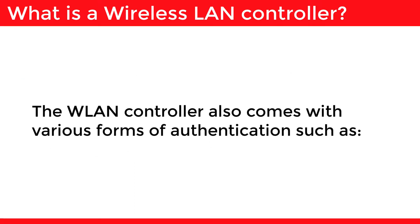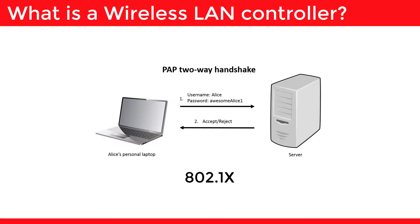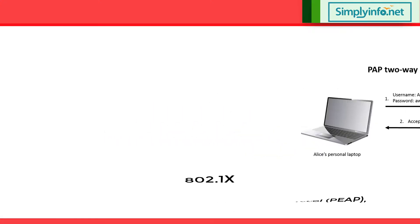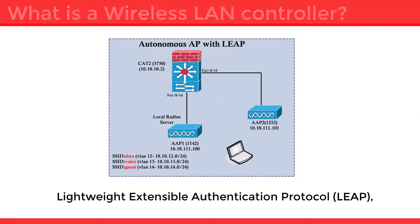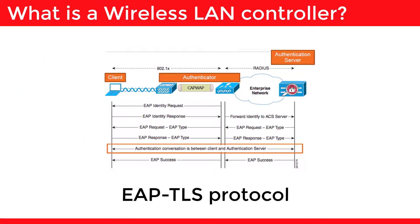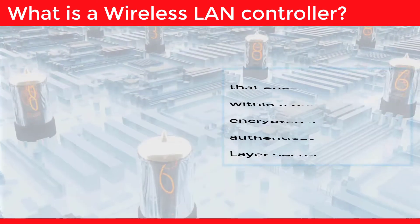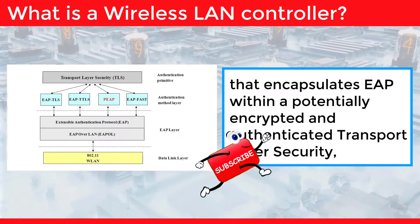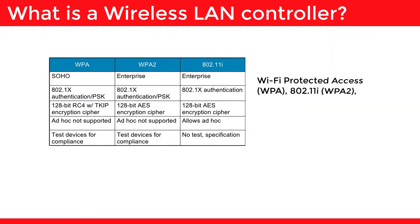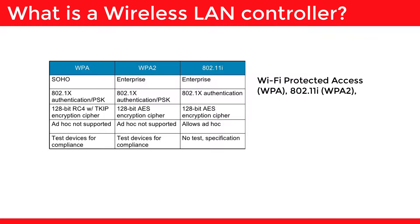The WLAN controller also comes with various forms of authentication such as 802.1x, Protected Extensible Authentication Protocol, Lightweight Extensible Authentication Protocol, and EAP-TLS — a protocol that encapsulates EAP within a potentially encrypted and authenticated Transport Layer Security. Additional options include Wi-Fi Protected Access 802.11i WPA2 and Layer 2 Tunneling Protocol L2TP.